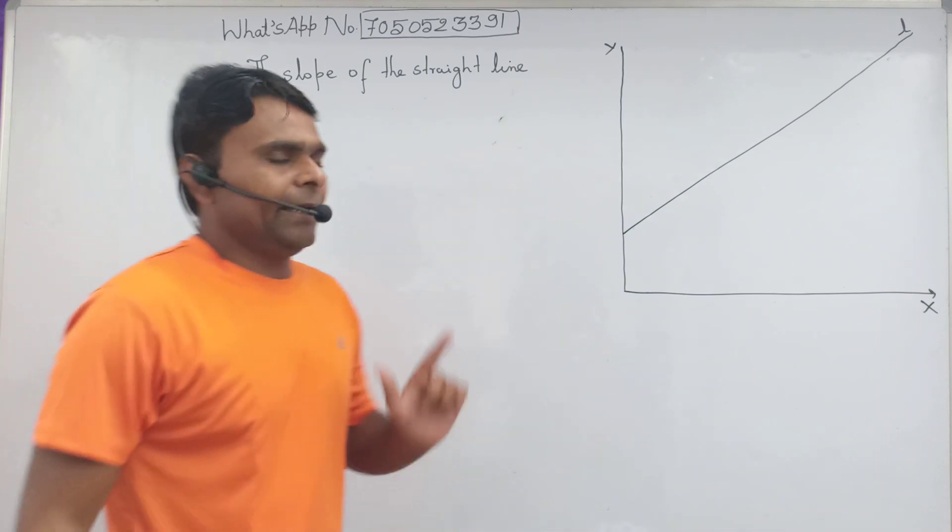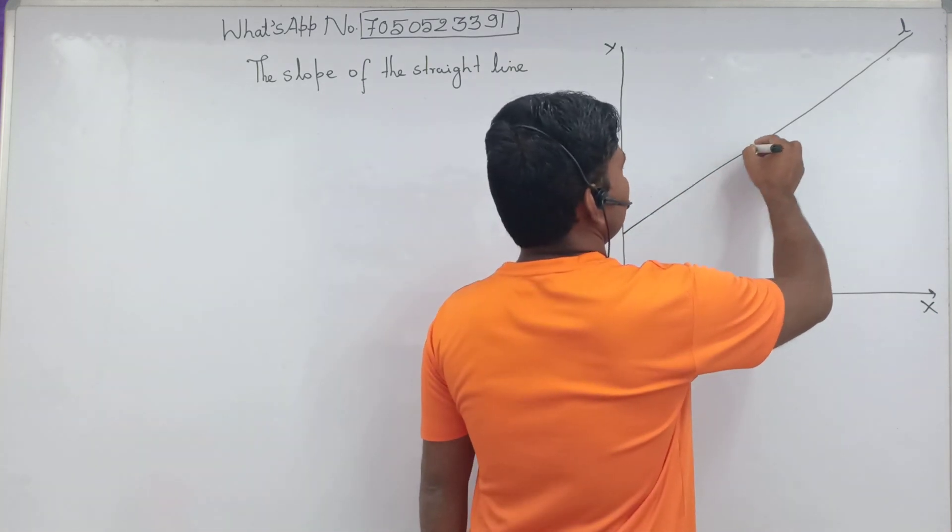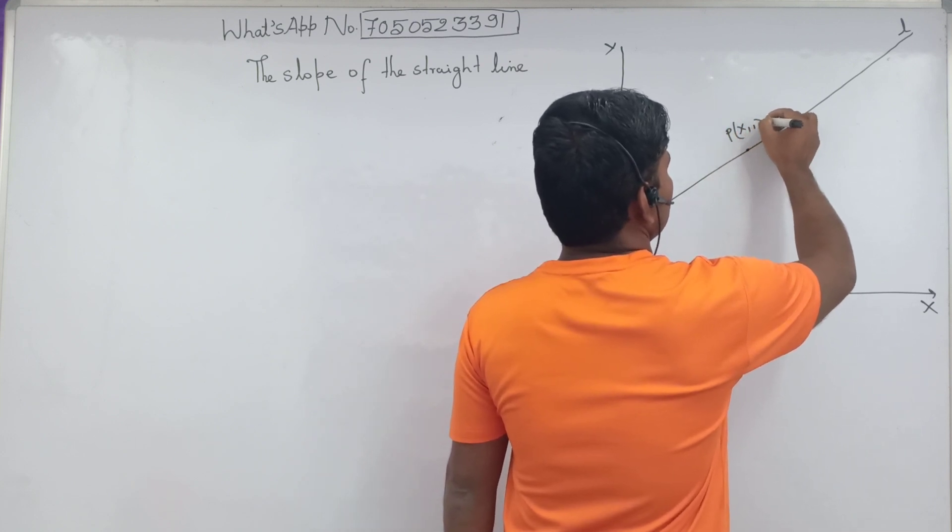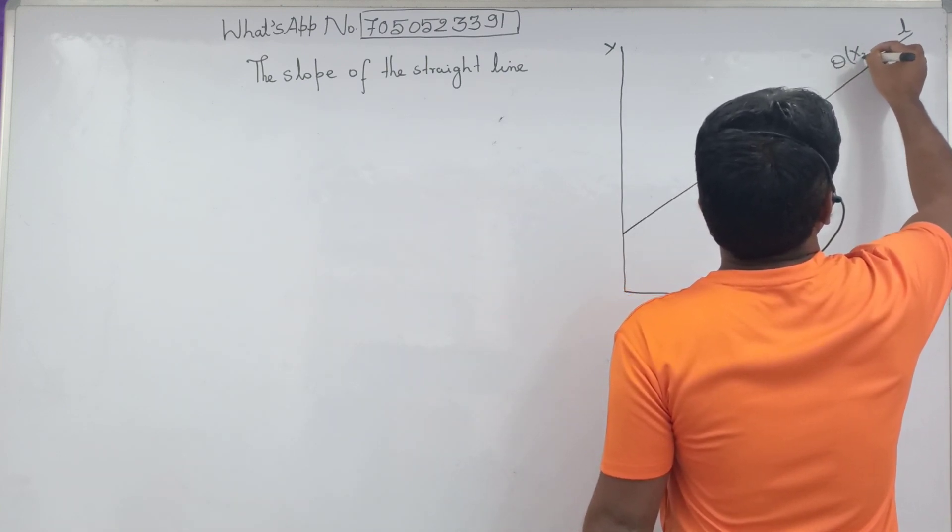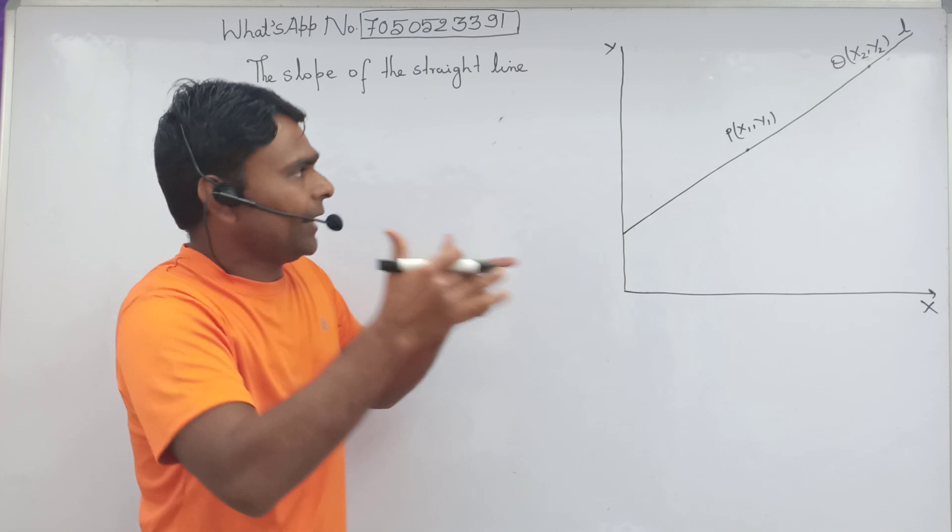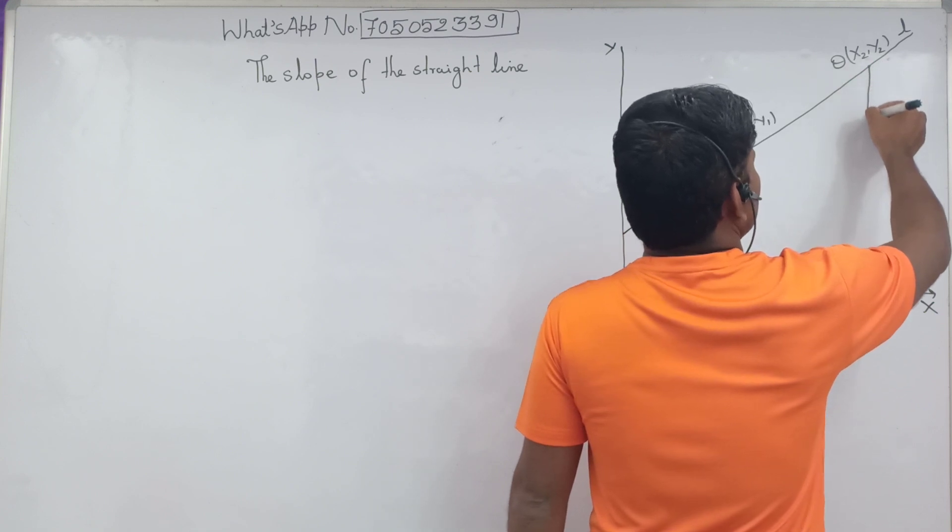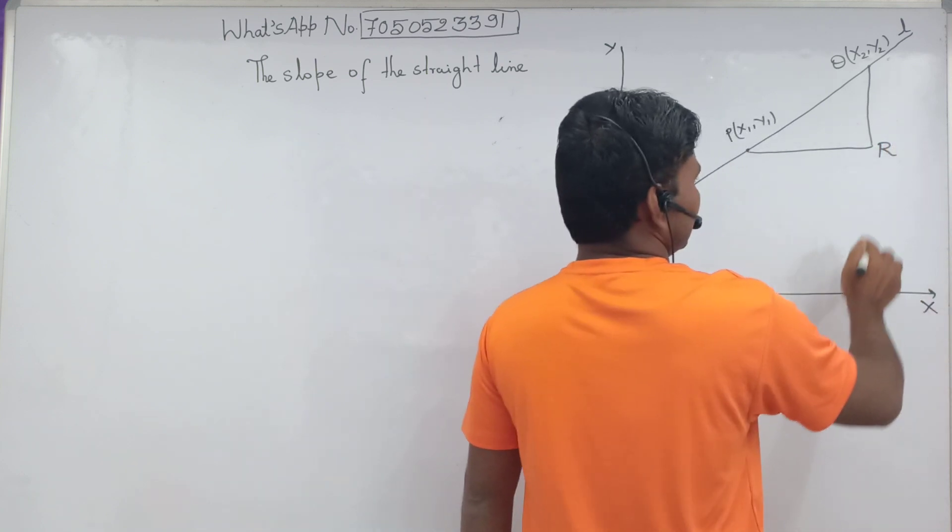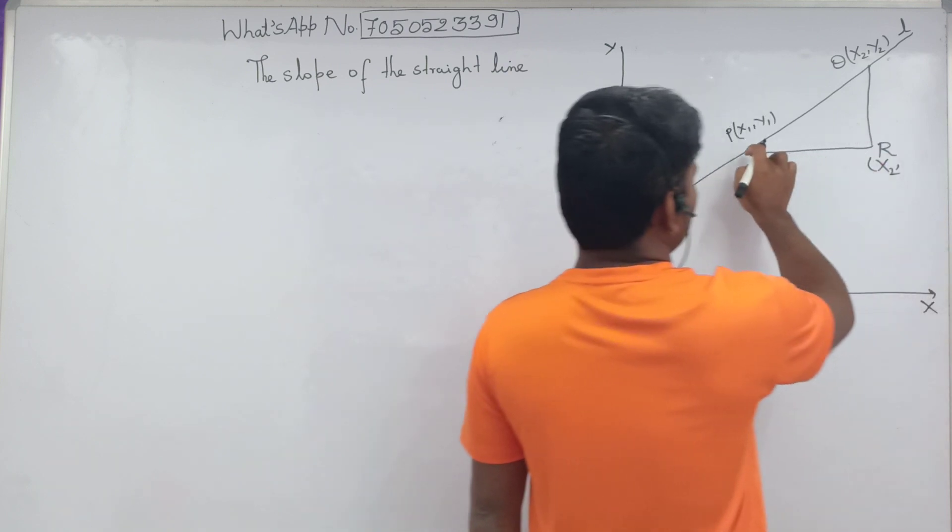I will take two distinct points on line. Here P is x1, y1 and here Q is x2, y2. There are two distinct points, two different points on line L.